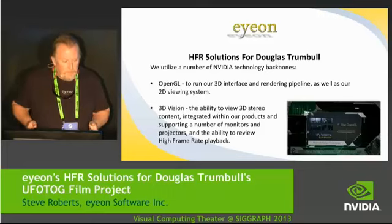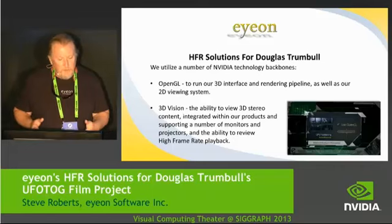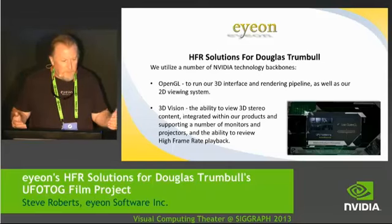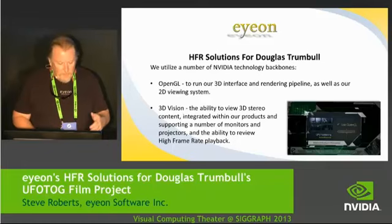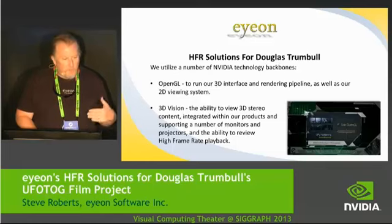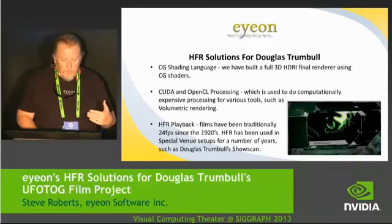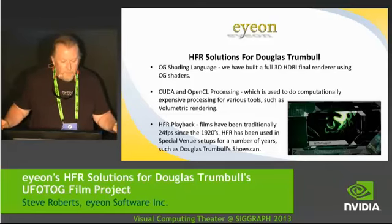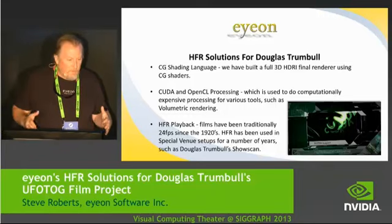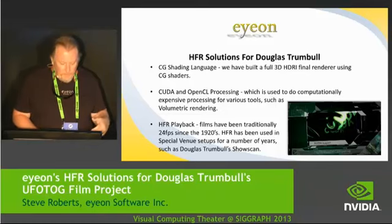We use a number of NVIDIA technologies — it's not just the card. We've used 3D Vision technology for all our stereo reviews because it syncs at the high frame rate; all of this is 120 frames a second capable. The OpenGL and the full CG renderer we've built does all this in real time. It's completely HDRI, built using CG language. We also do CUDA and OpenCL processing of 2D tools, so we can do things like volumetric rendering — we built a volumetric renderer inside Fusion. And now we can do high frame rate playback.